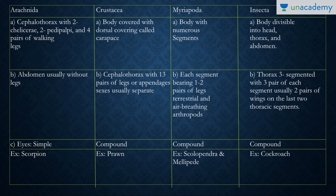In Myriapoda, the body has numerous segments, each bearing one to two pairs of legs. They are terrestrial and air-breathing arthropods with compound eyes. The most important examples are Scolopendra, which is a centipede/millipede — for your curriculum, the millipede, also known as Scolopendra, is the key example to remember.